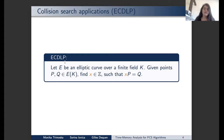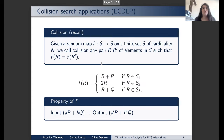Let us set some notation. Let E be an elliptic curve over a finite field K. The ECDLP problem is: given two points on this curve P and Q, find an integer X such that X times P equals Q. We now show an example of what a collision is for this application.